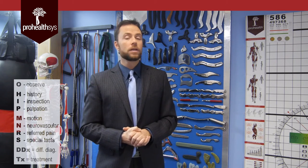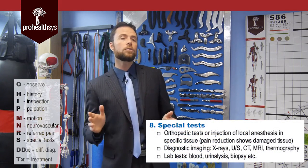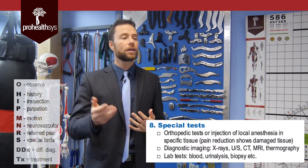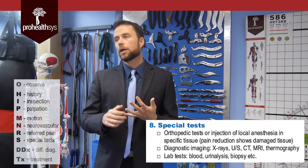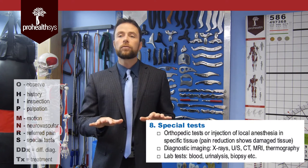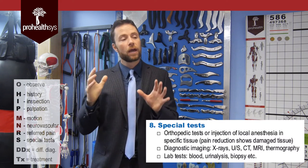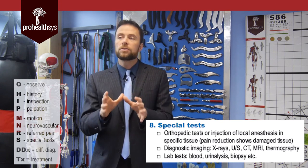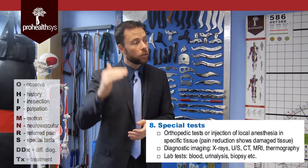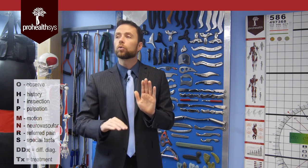After referred pain, you can progress to special tests. This is lowest on the list before you come to differential diagnosis, and you're only going to use these special tests to help rule in or rule out a potential pathology. Special tests include things like orthopedic testing, diagnostic ultrasound, x-rays, MRIs, and blood tests. They are your lowest level to figure out what's going on after you've followed your basic O-HIPNERS protocol. Then you finish with a differential diagnosis list of things you need to rule in or rule out.